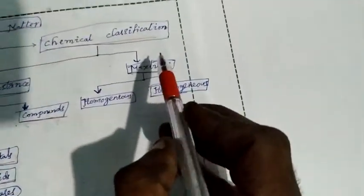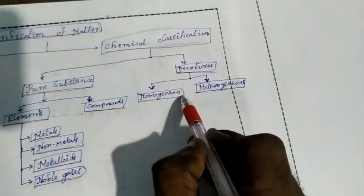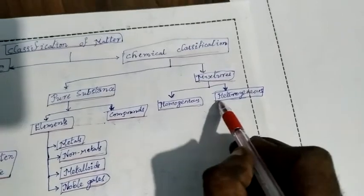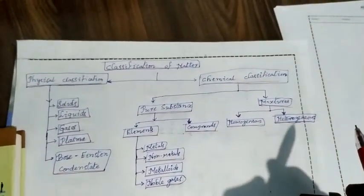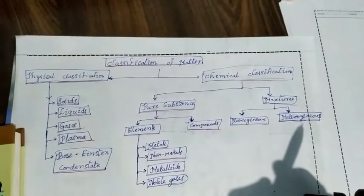Elements are classified into metals, nonmetals, metalloids, and noble gases. Compounds have no further classification.